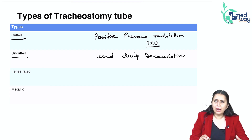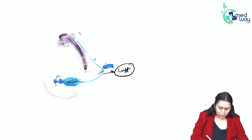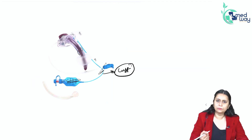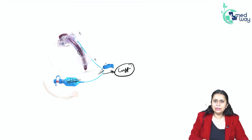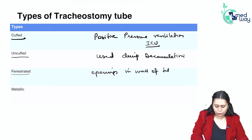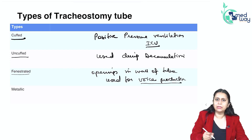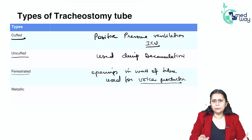Then we have the fenestrated tube. There are openings in the wall of the tube. This allows air to pass and is used when we are encouraging the patient to speak — for voice production. However, there is a risk of aspiration and granuloma formation with the fenestrated tube.